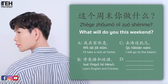ตัวเลือก ข. เข้อ ชิ้ยิงหยุ เข้อหันหยุ — Learn English and Chinese. ก็คือจะเรียนภาษาอังกฤษและภาษาจีน เป็นเด็กเรียนเนอะ เด็กดีมีความรู้